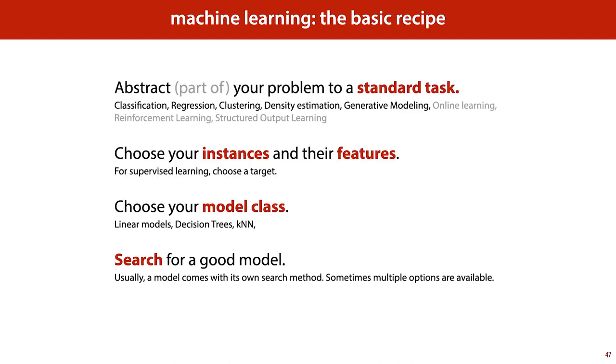To summarize, this is the basic recipe for doing machine learning. We take a problem. We translate the problem or part of the problem to an abstract task, like classification. We choose our instances and our features. We choose a model class. And then we search the model space for a model that solves our problem well. The basic recipe doesn't always fit every situation and we'll look at those cases too. But this is always a good place to start, especially when you're new to machine learning.